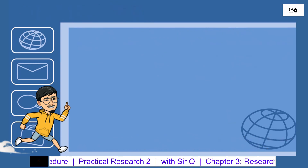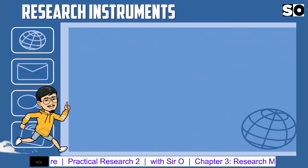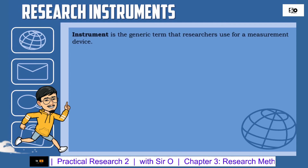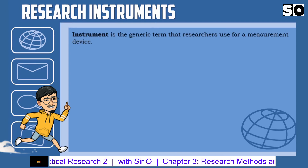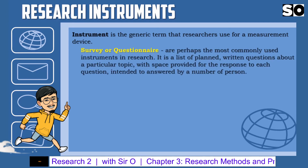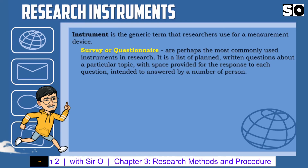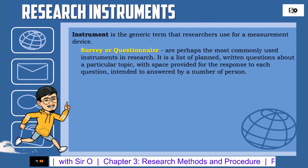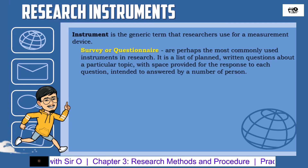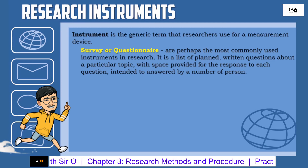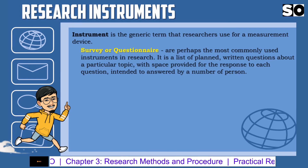Research Instruments. Instruments is the generic term that researchers use for a measurement device. Surveys or questionnaires are perhaps the most commonly used instrument in research. It is a list of planned written questions about a particular topic with space provided for the response to each question, intended to be answered by a number of persons.